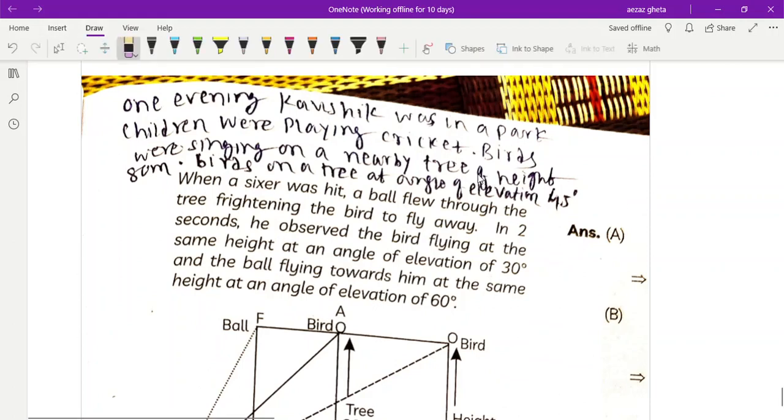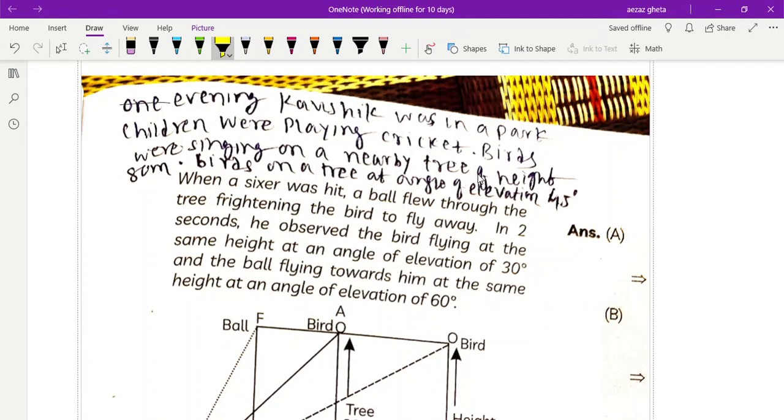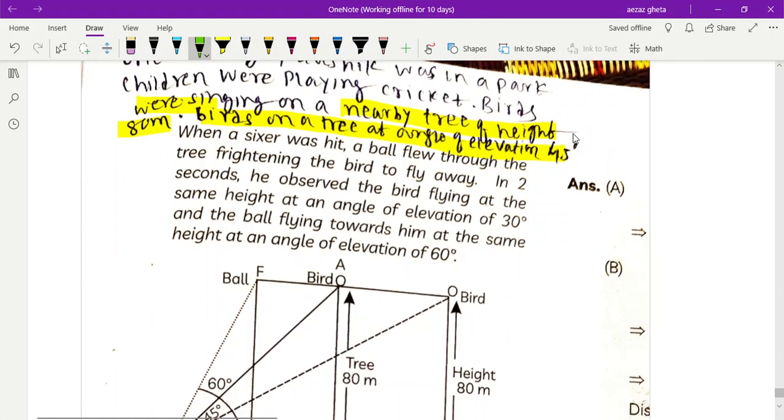One evening Kaushik was in a park. Children were playing cricket, birds were singing on a nearby tree of height 80 meters. A bird sat on the tree at an angle of elevation 45 degrees. When a sixer was hit, a ball flew through the tree frightening the bird to fly away in two seconds.